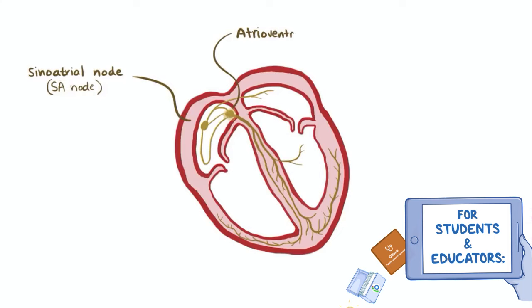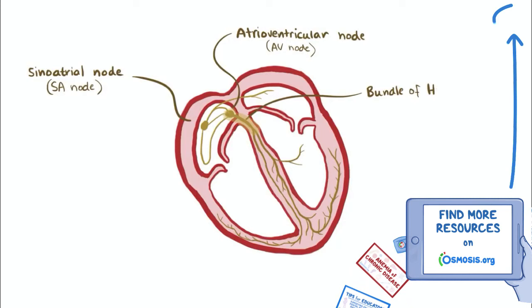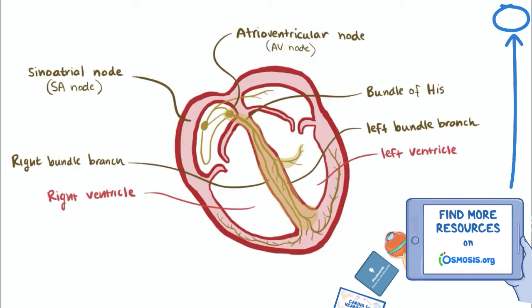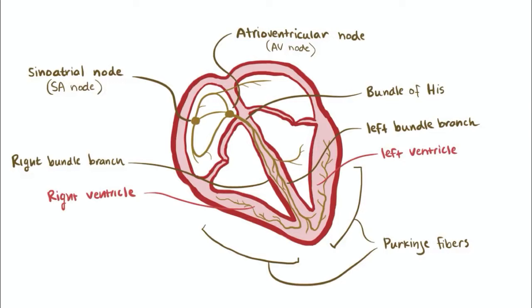The signal then moves through the atrioventricular or AV node, down into the lower chambers, where it reaches the bundle of His and then splits into the left and right bundle branches, serving the left and right ventricles respectively. The signal then goes on to each ventricle's Purkinje fibers, which leads to ventricular contraction.